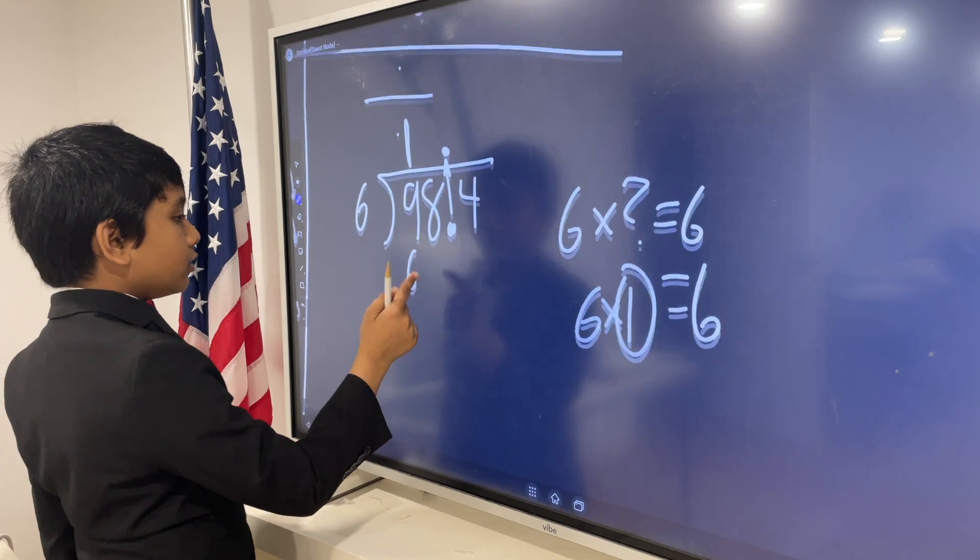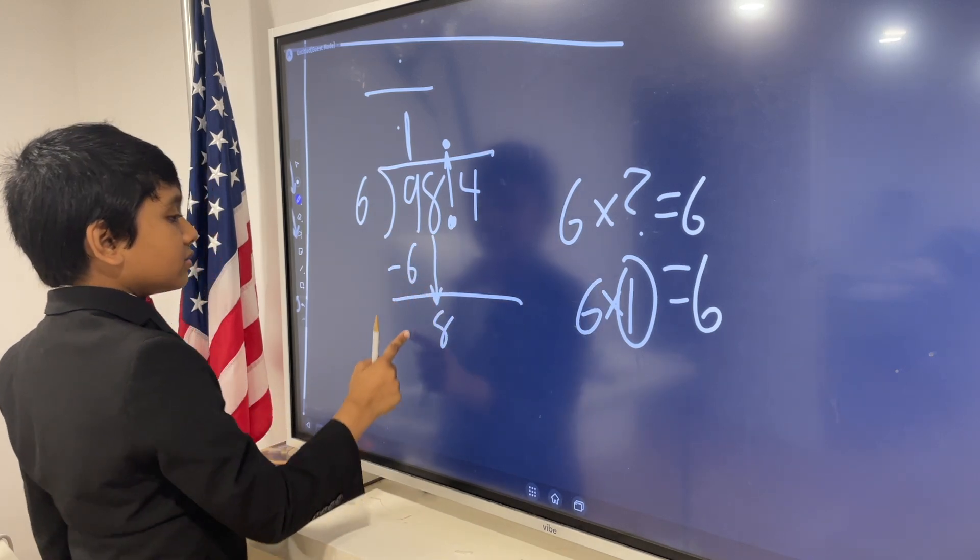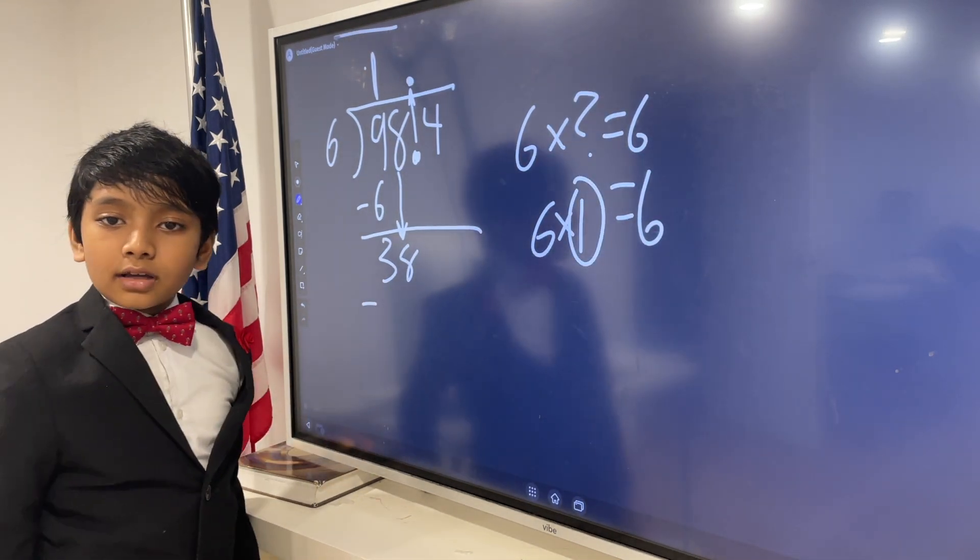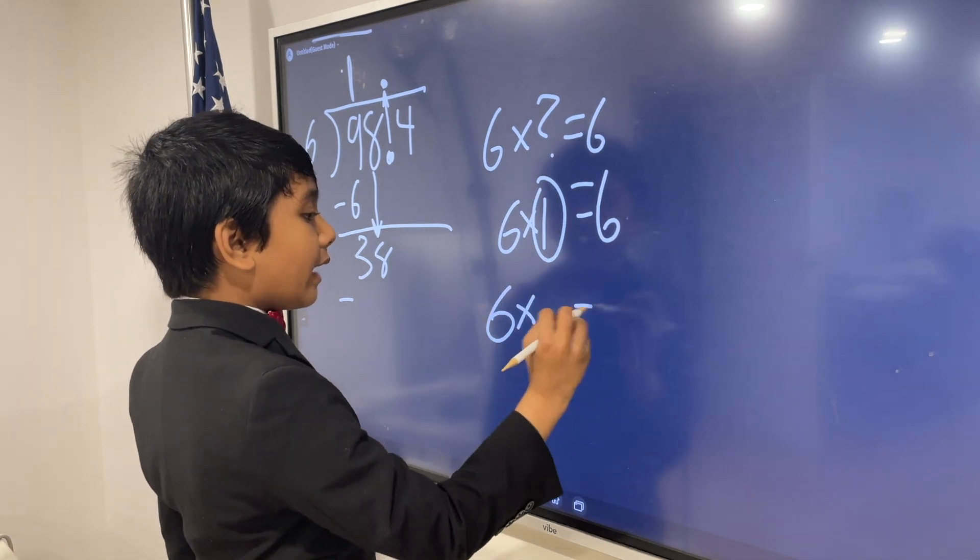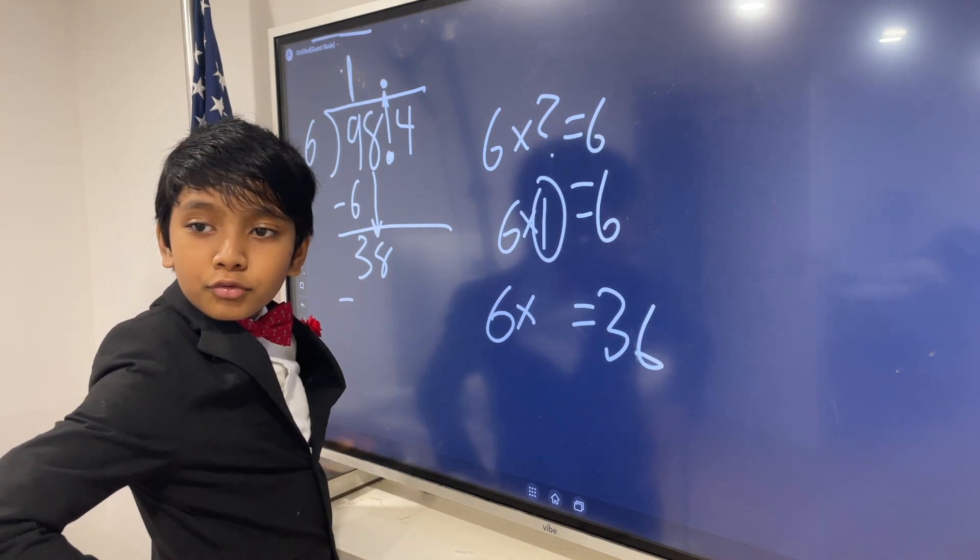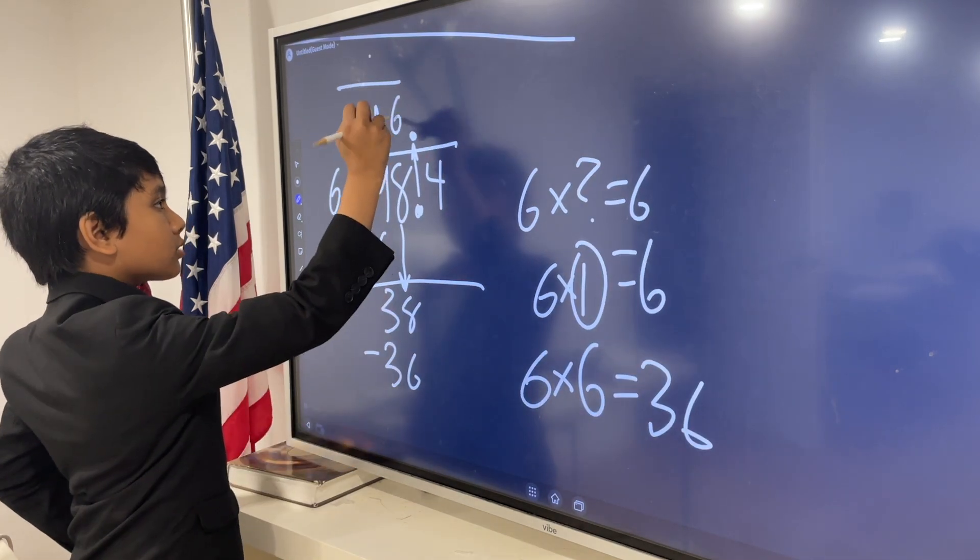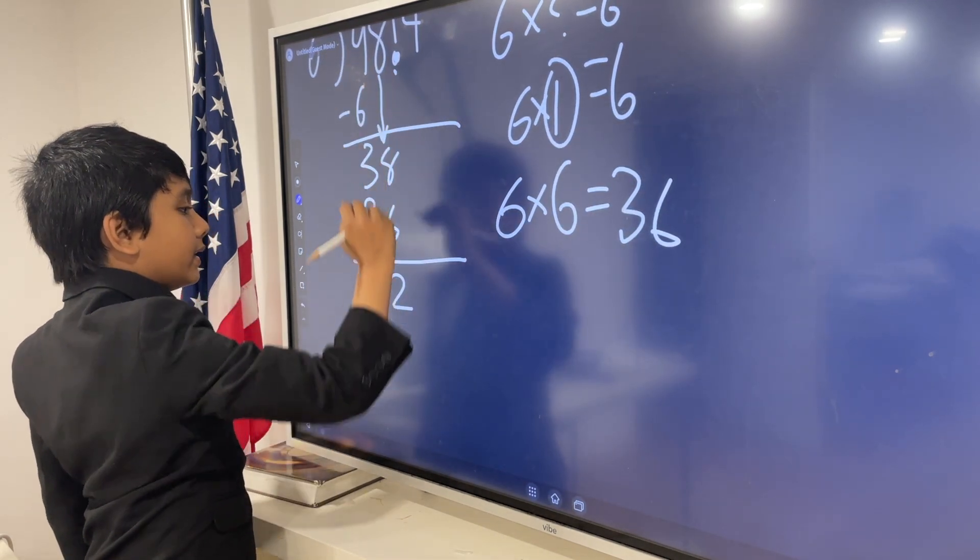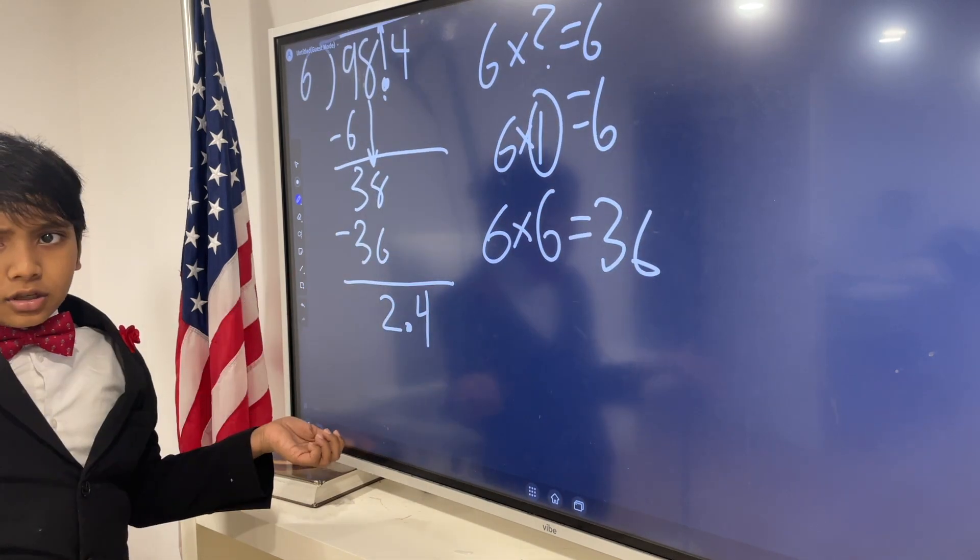Now, we're going to bring down the 8. So, just like a regular division. So, 9 minus 6, that's 3. And 38, what is the largest multiple of 6 that's smaller than 38? Well, that would be 36. So, 6 times what is 36? 5, 4, pause the video for more time, 2, 1. That would be 6! So, we get 38 minus 36. We're going to put a 6 in the quotient. And we have 2.